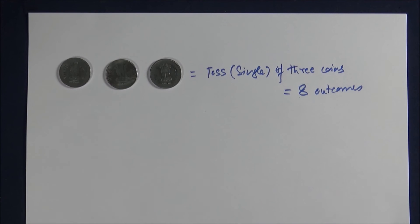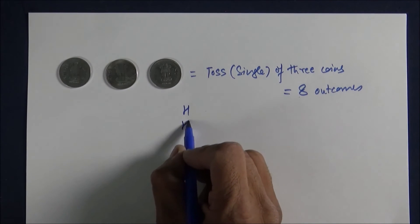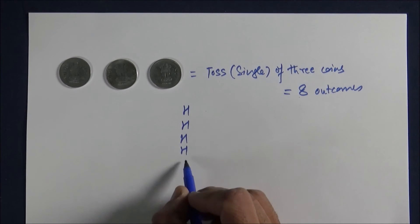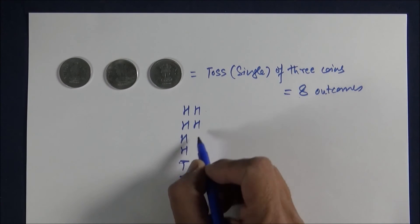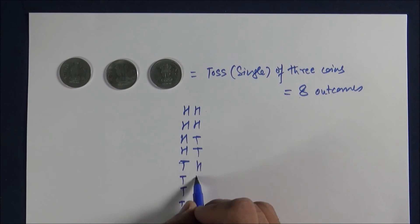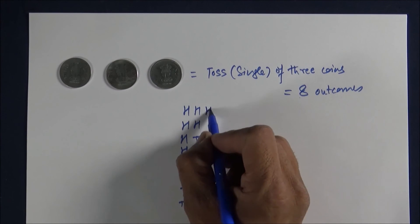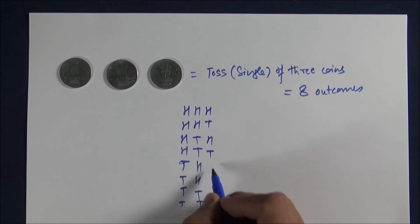Just write half of eight, which is four. So you write heads four times in a column and then tails four times, and do again half of it, which is two. So write heads, heads, tails, tails, heads, heads, tails, tails, and again do half of it, which is just one. So write heads, tails, heads, tails, heads, tails, heads, and tails. So this is eight outcomes.